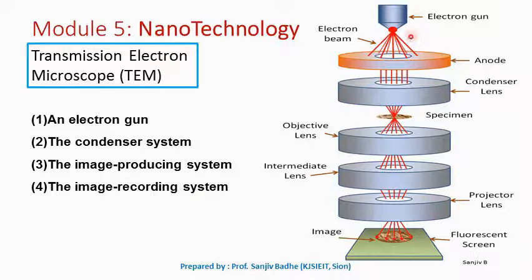The electron gun produces an electron beam. It is a cathode in the form of a heated tungsten filament, so electrons are emitted. These electrons are accelerated towards the sample with the help of an anode, which is kept at positive potential.